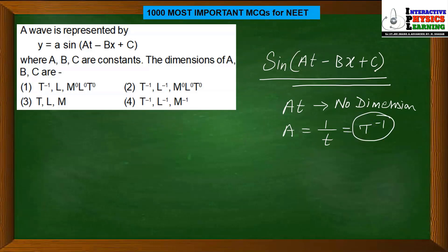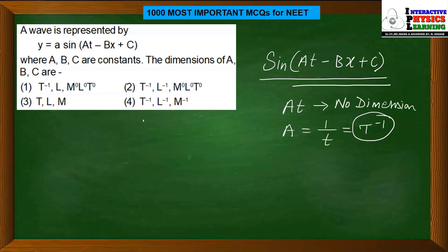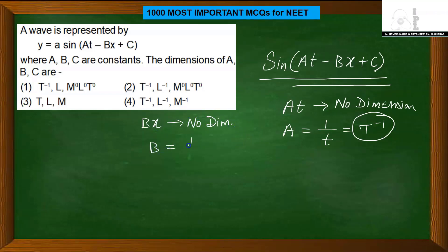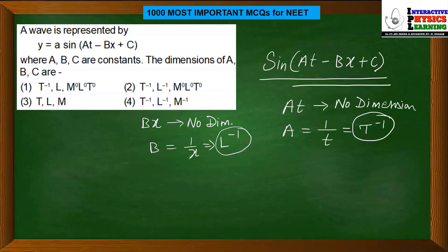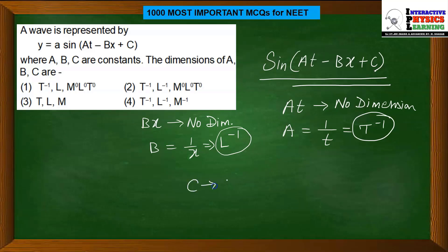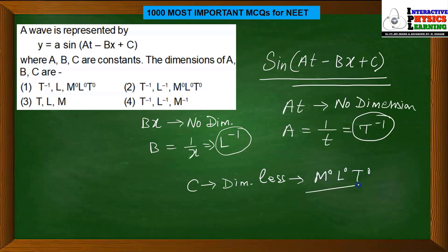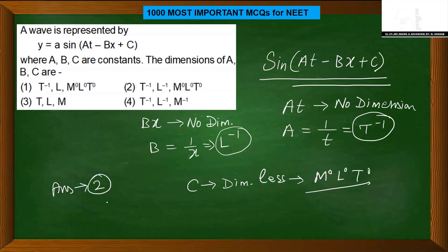So the dimension of a is T⁻¹. Since T⁻¹ appears in option 3, but T⁻¹ is also in other options, we cannot eliminate yet. For b: since bx is dimensionless and x has dimension L, the dimension of b = L⁻¹. For c: c appears alone with no quantity, so c is dimensionless — its dimension is M⁰L⁰T⁰. Checking options 2 and 4, the combination of T⁻¹, L⁻¹, and M⁰L⁰T⁰ is found only in option 2. So the answer is 2.